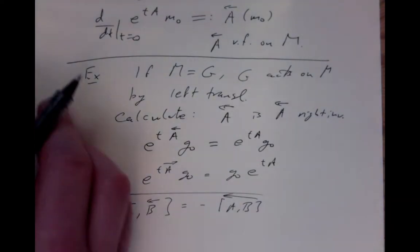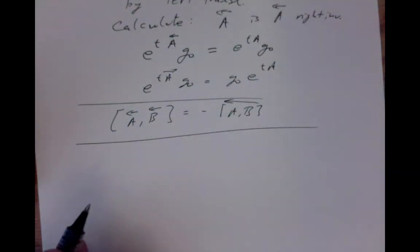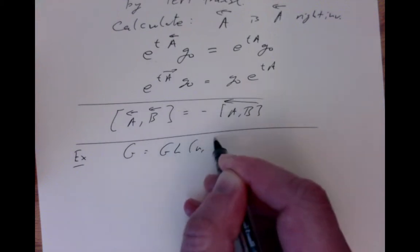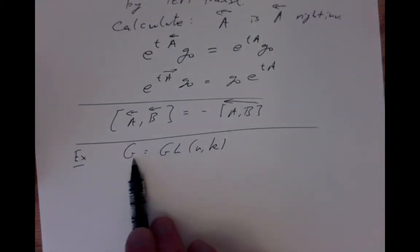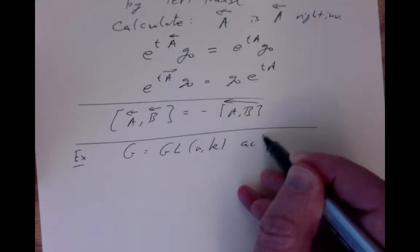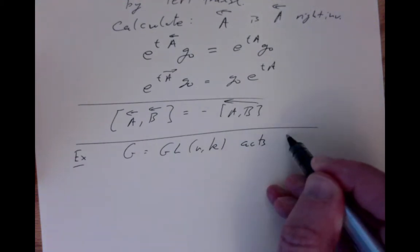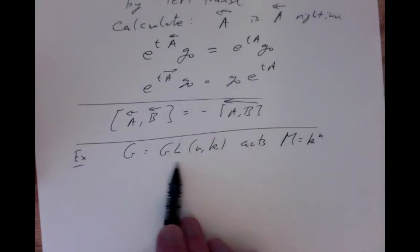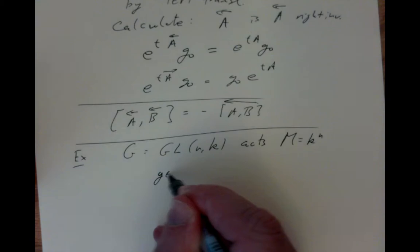For a more concrete example, let's consider the general linear group, since almost all of our examples are subgroups of it. The general linear group acts on the manifold of n-component vectors, since its elements are invertible n-by-n matrices. The operation is simply matrix multiplication times a vector — just linear algebra.